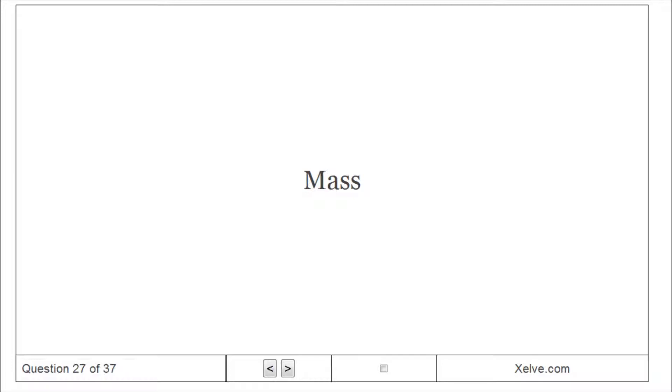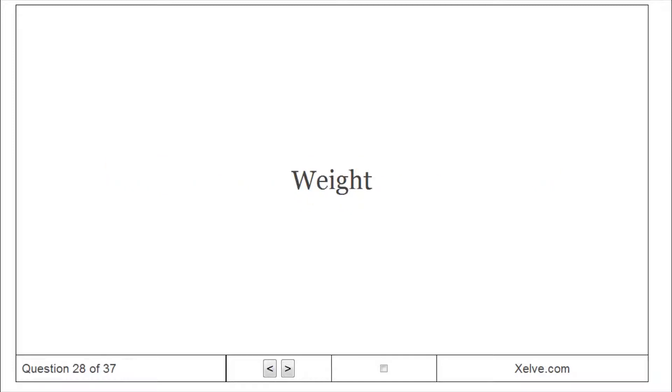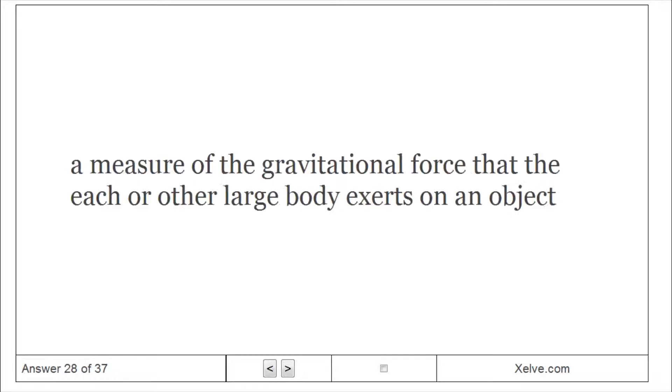Mass: A measure of the amount of matter in an object. Weight: A measure of the gravitational force that the earth or other large body exerts on an object.